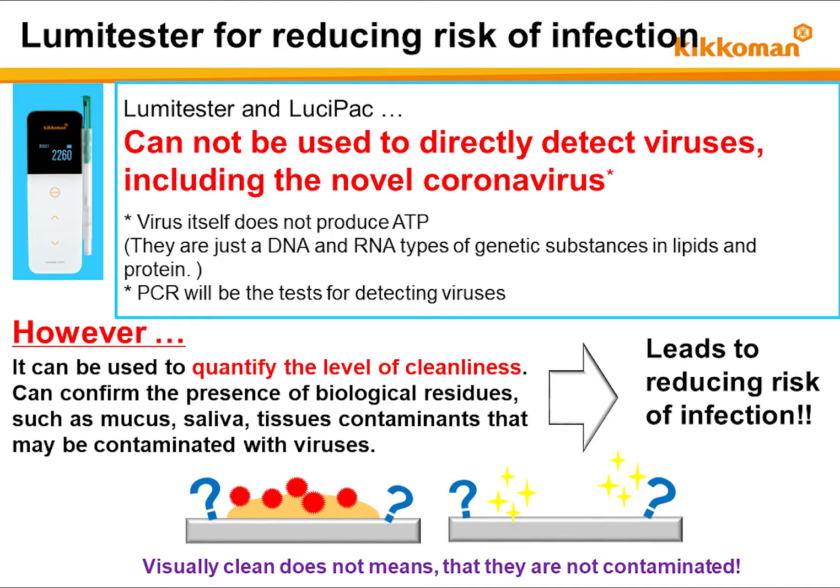Now I would like to explain how to use the LumaTester and Lusipac. It is important to mention that the ATP test or A3 test performed with the LumaTester and Lusipac cannot directly detect viruses, including COVID-19. This is because viruses do not produce or contain ATP, ADP, and AMP. In order to measure viruses directly, PCR or antigen antibody reaction tests are required.